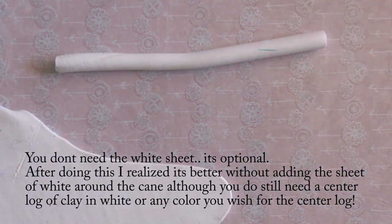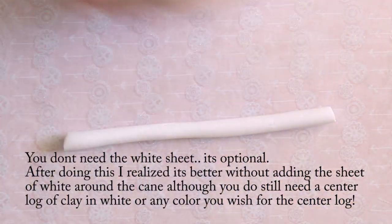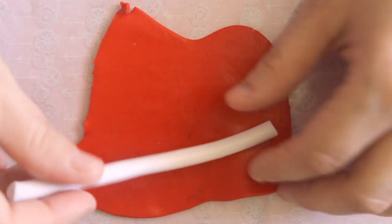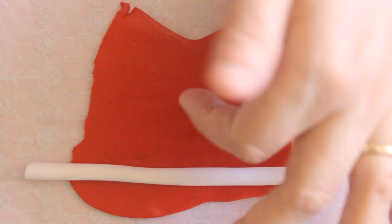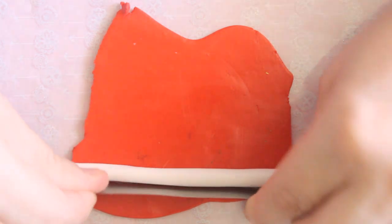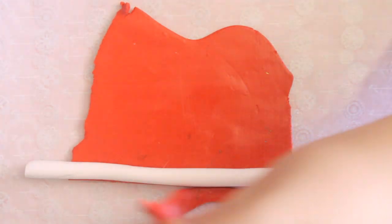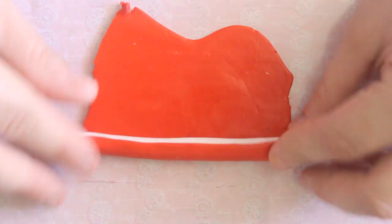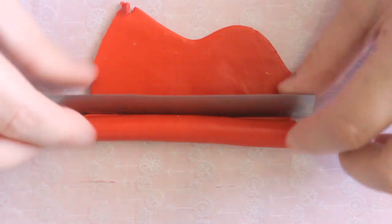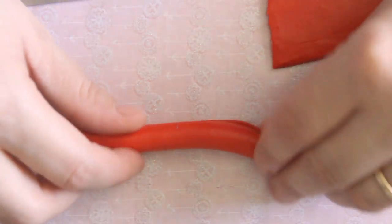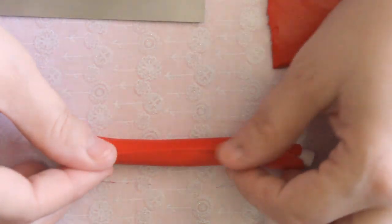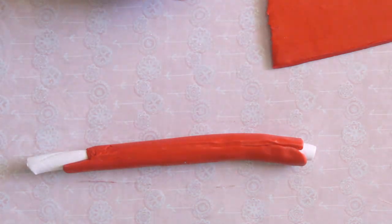So I already have my sheets rolled out and I'm going to start with my log and the red. What you're going to do is roll the red around the log of white, and then cut it where it meets. Just like that.